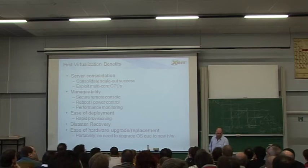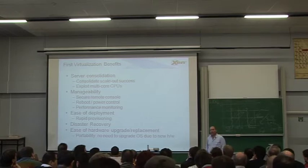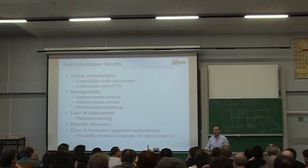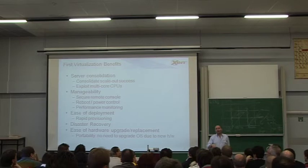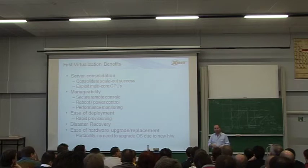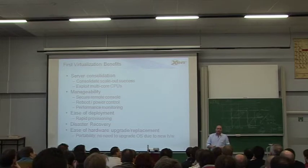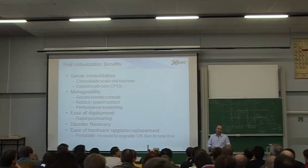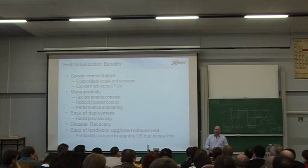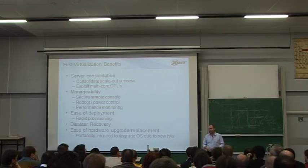The first use case for virtualization was server consolidation — running multiple virtual machines on the same machine. Most companies organize their IT infrastructure with one OS image running one application. You don't put multiple applications in the same OS because of configuration interactions, and application vendors often won't support their application if it's running alongside something else. This is especially prevalent in the Windows world, and the net result is companies end up buying more and more servers — suffering from what's called server sprawl.